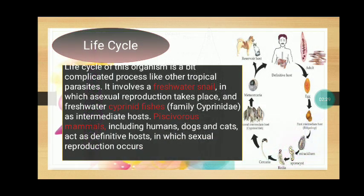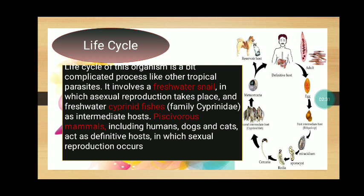The life cycle of this organism is a somewhat complicated process, like any other tropical parasite. It involves a freshwater snail in which asexual reproduction takes place, and freshwater cyprinid fishes as intermediate hosts. Fish-eating mammals including humans, dogs, and cats act as definitive hosts in which sexual reproduction occurs.